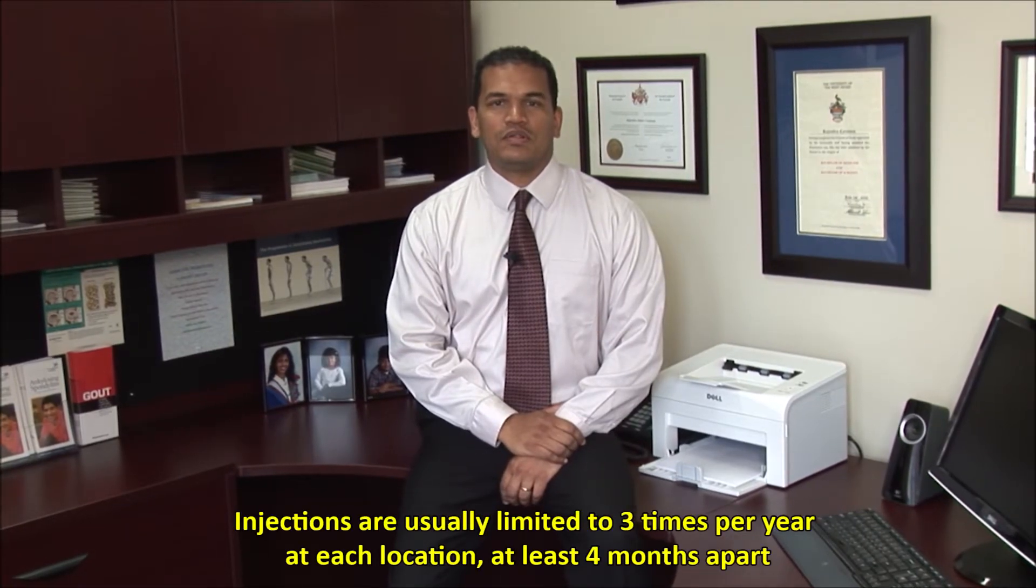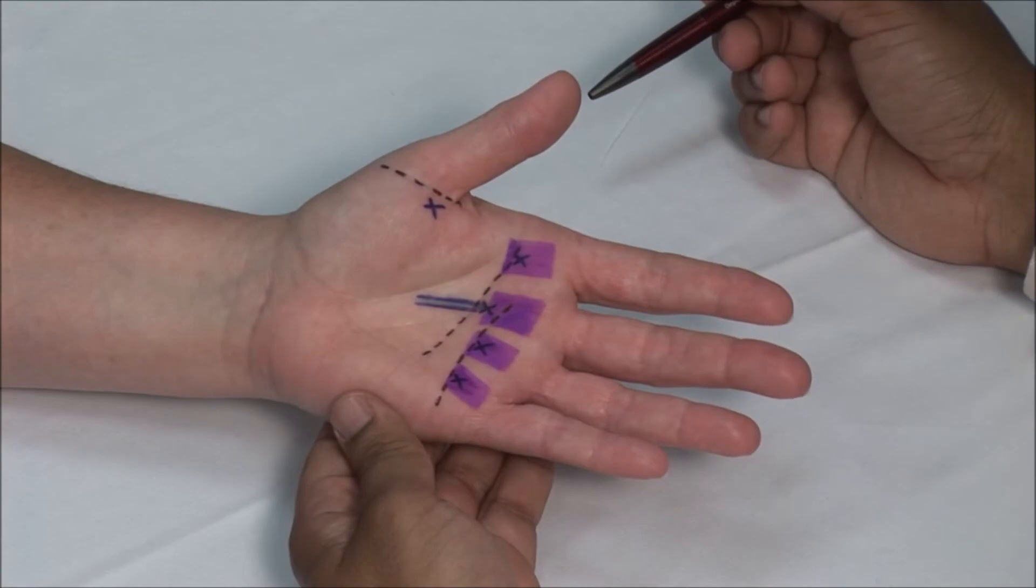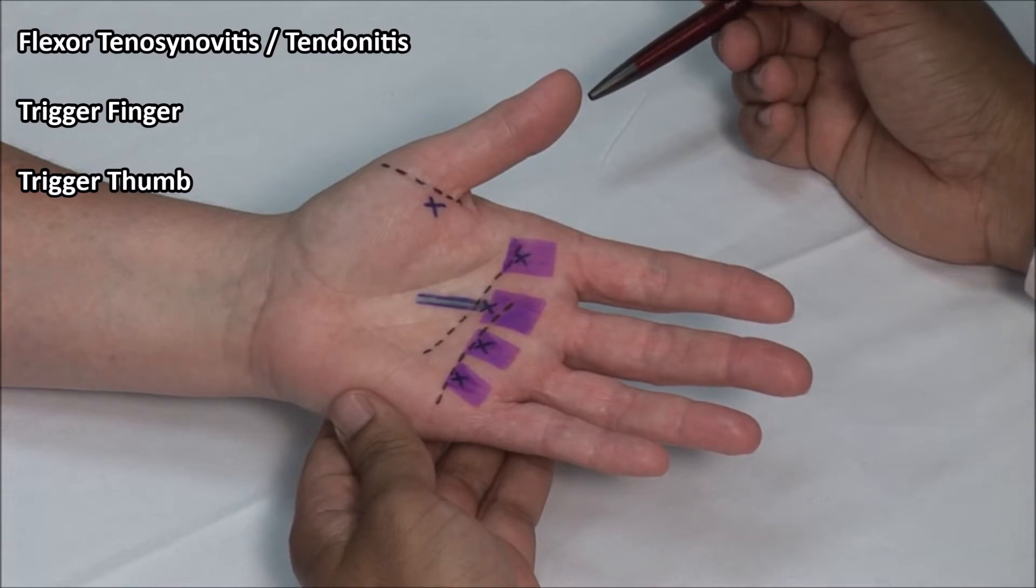Corticosteroid injections are very helpful but may need to be repeated a few times. Injections around the flexor tendons of the hand are often done for flexotenosynovitis, trigger finger, or trigger thumb.